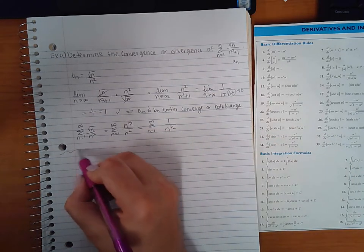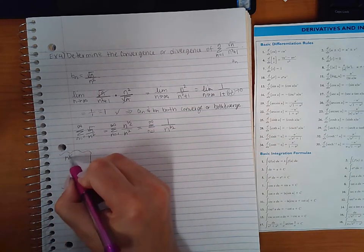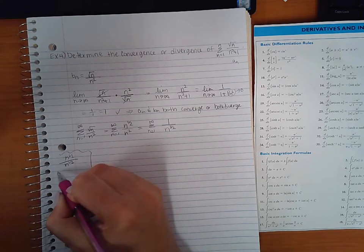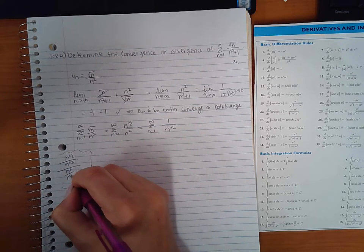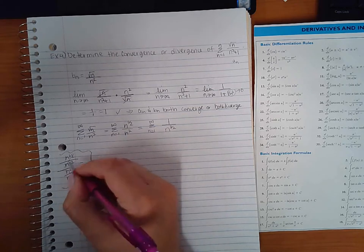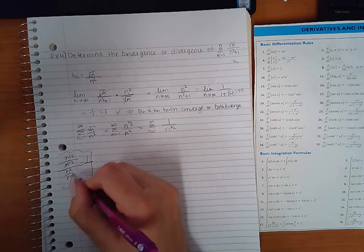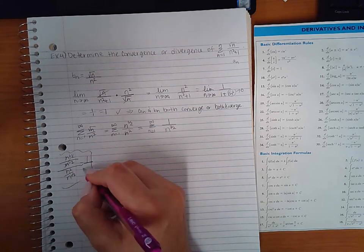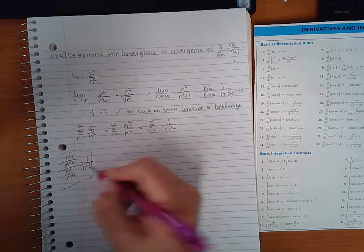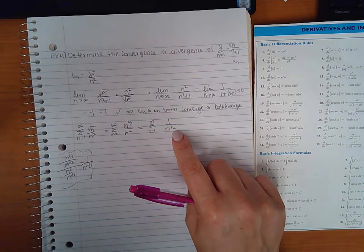If you want to see that side work worked out, it's n to the 1 half divided by n to the 1 half, and then n squared divided by n to the 1 half. So here again, they reduce each other, I just get 1. Here you end up having to subtract the powers 2 minus 1 half, which is where the 3 halves came from.